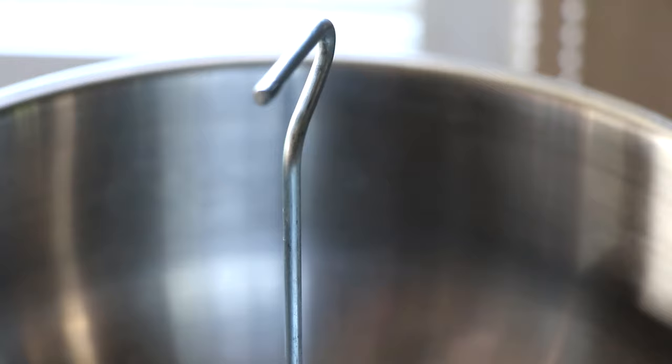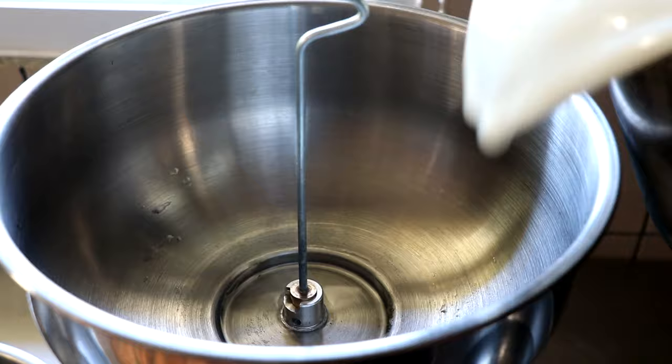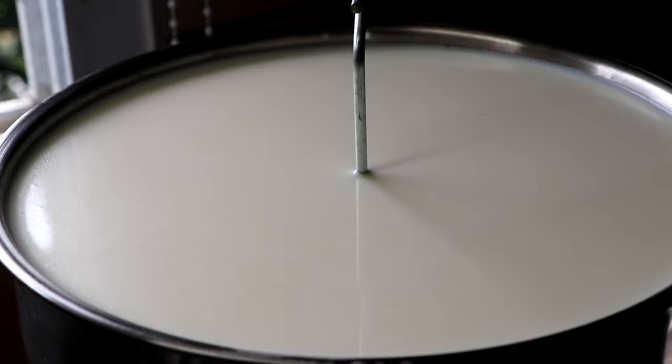After all the water has run through the separator, close the valve by turning it clockwise, and with the machine still on, go ahead and add your milk. It is important to know that you want to have your milk heated to about 100 degrees Fahrenheit, which will help in the separation of the milk and the cream.